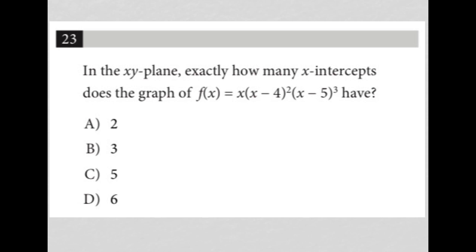Anytime you see x-intercept, what you should be thinking is y = 0. Now, we don't have y here, we have f(x). But we should know that y and f(x) are the same thing. So that means for x-intercept, f(x) = 0.